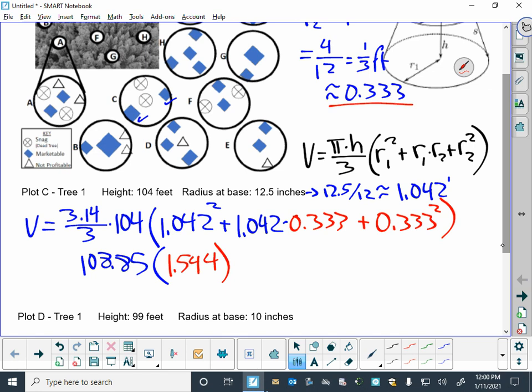I'm just double-checking what I put in there. So when I multiply those together, the 108.85 times the 1.544, I get approximately 168.1 cubic feet. That is going to be my answer—168.1 cubic feet.